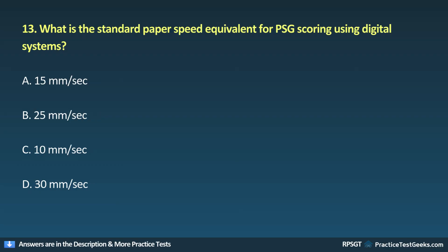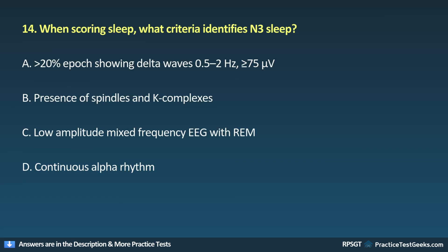Question 13: What is the standard paper speed equivalent for PSG scoring using digital systems? A. 15 mm per second, B. 25 mm per second, C. 10 mm per second, D. 30 mm per second.